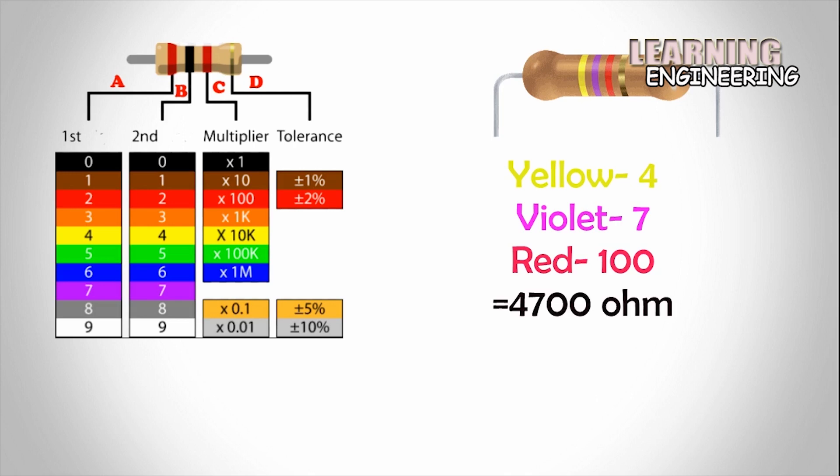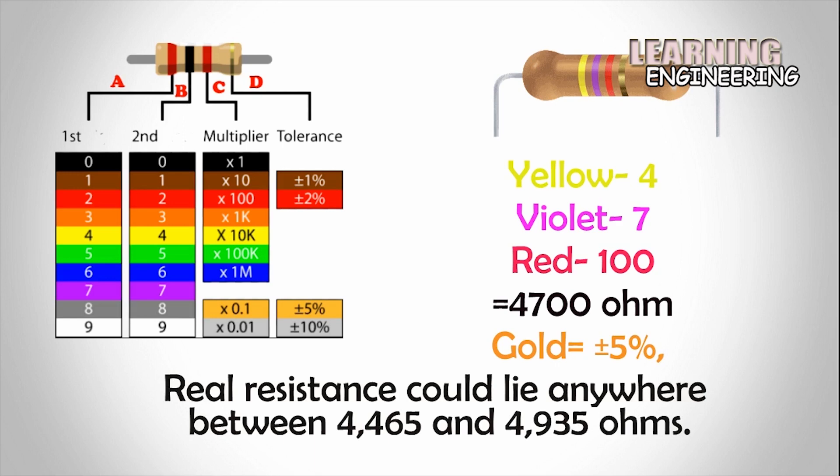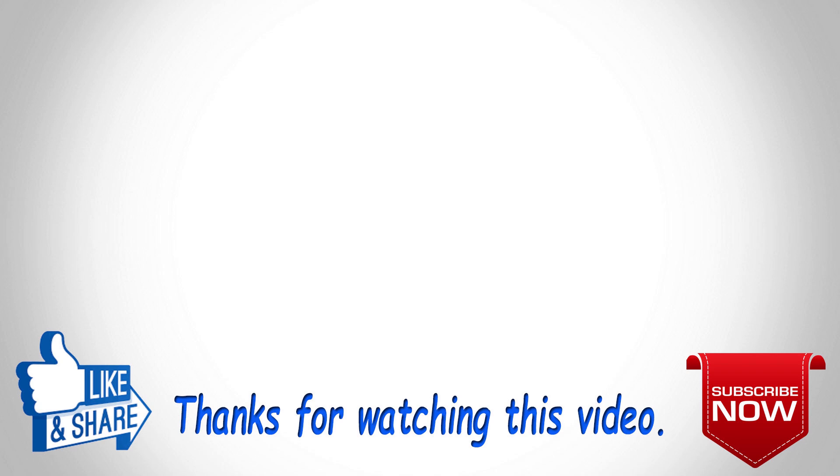Gold signifies that the tolerance is plus minus 5%, so the real resistance could lie anywhere between 4,465 and 4,935 ohms. And if you have any questions, write in the comment box.